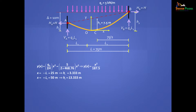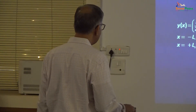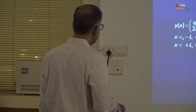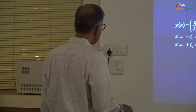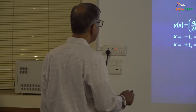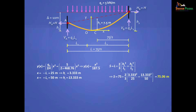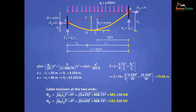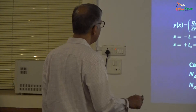Now you have the equation of the cable. Use the cable equation to plug in X = L1 to get H1 and X = L2 to get H2. Then the length of the cable follows from taking the left half (symmetric span 2L1) and right half (symmetric span 2L2) and adding them. The cable tensions at the two ends are the resultants of the known vertical reactions and the constant horizontal reaction H.